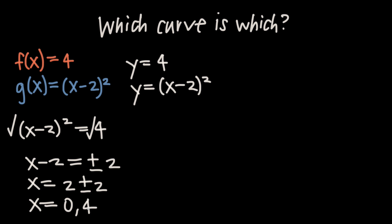Now that we have the intersection points, we pick a test value inside the interval between 0 and 4. We'll pick x equals 2 since it's right in the middle, though any value between 0 and 4 — like 1 or 3 — would work. We take that test value and plug it into both of the original equations f and g.